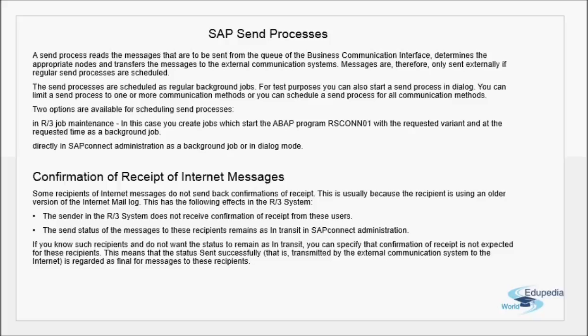Messages are only sent externally if regular send processes are scheduled. When you try to send from SAP after making all required configuration and the Exchange connection, you have to actually start sending. All messages to be sent from the SAP system are collected in a queue, and we have different nodes — one for mail, one for fax, etc. — so the appropriate node must be determined and the message sent accordingly.